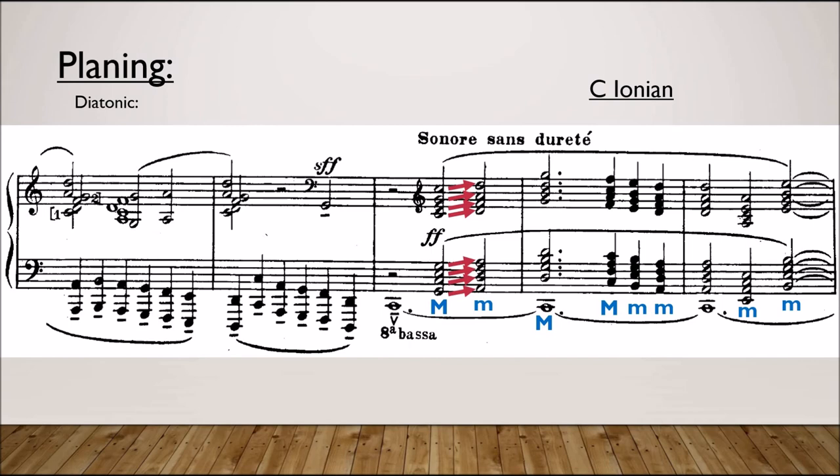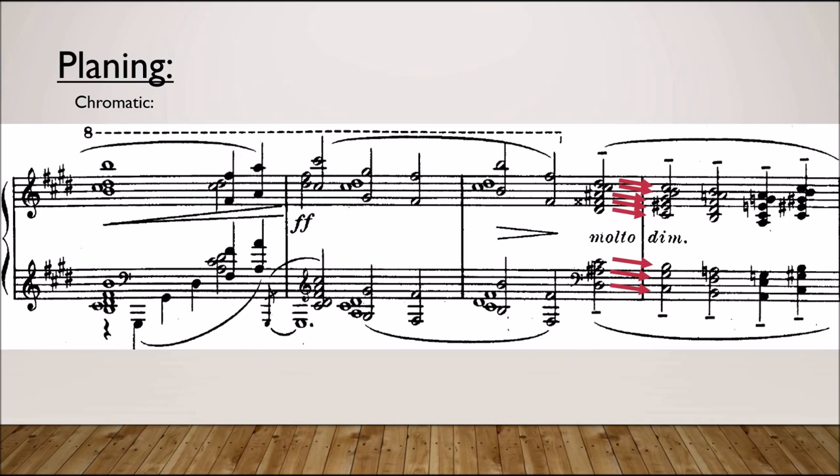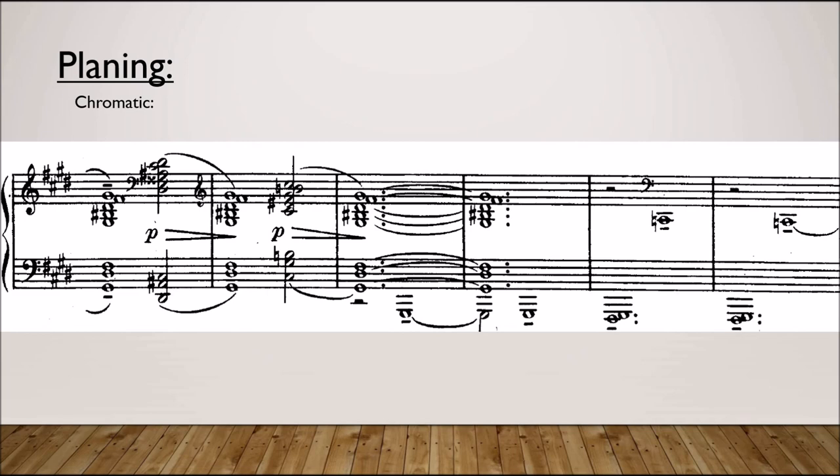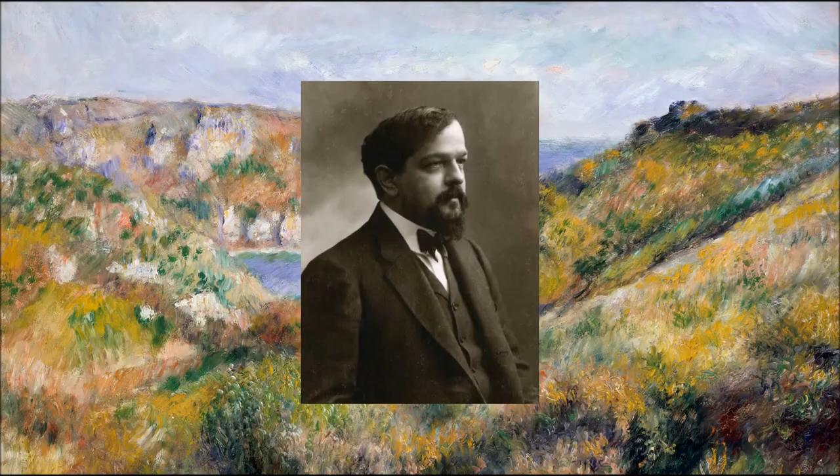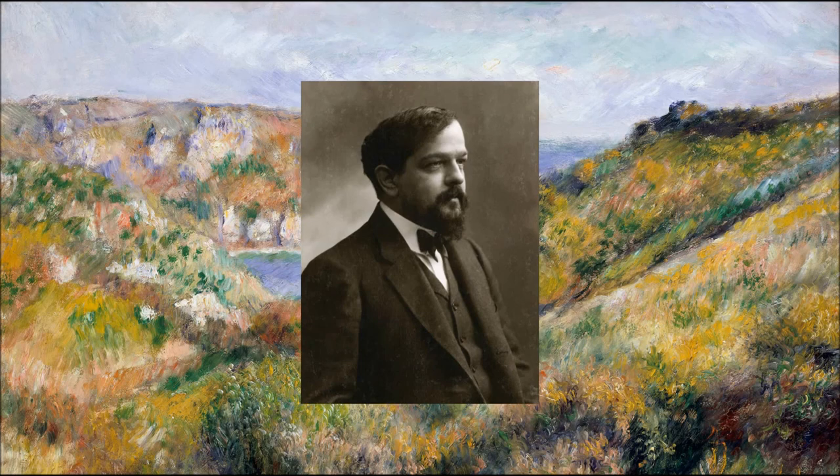Later in the piece, Debussy takes the same concept of planing, but transposes the intervals exactly to get the same quality of chord each time, in this case a major minor 7th. In this way, Debussy used familiar sounds from tonality, like the dominant 7th and common pitch class collections, but stripped them of any tonal function and used them as sounds to color his compositions.